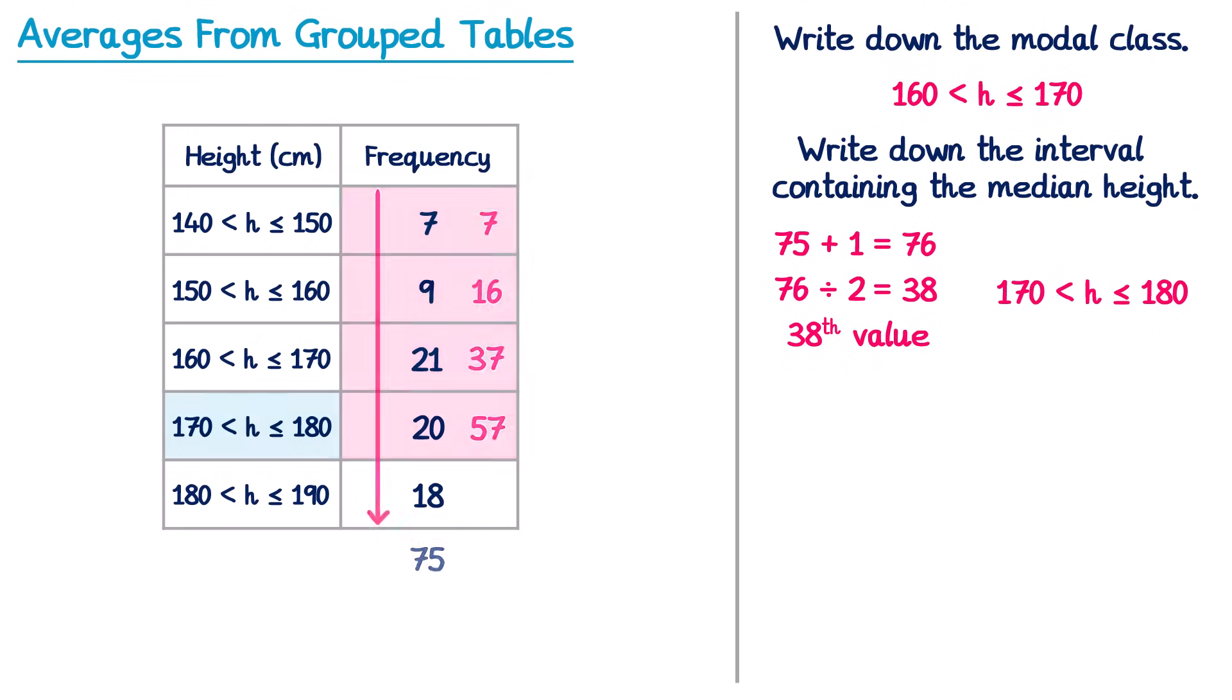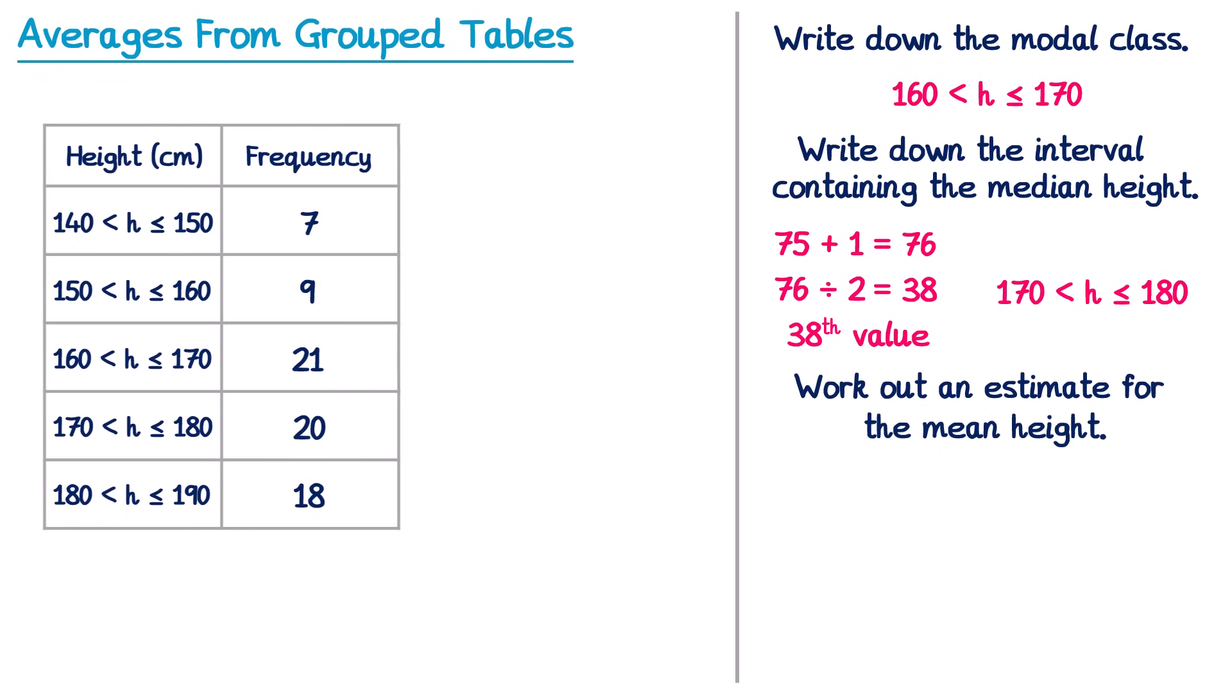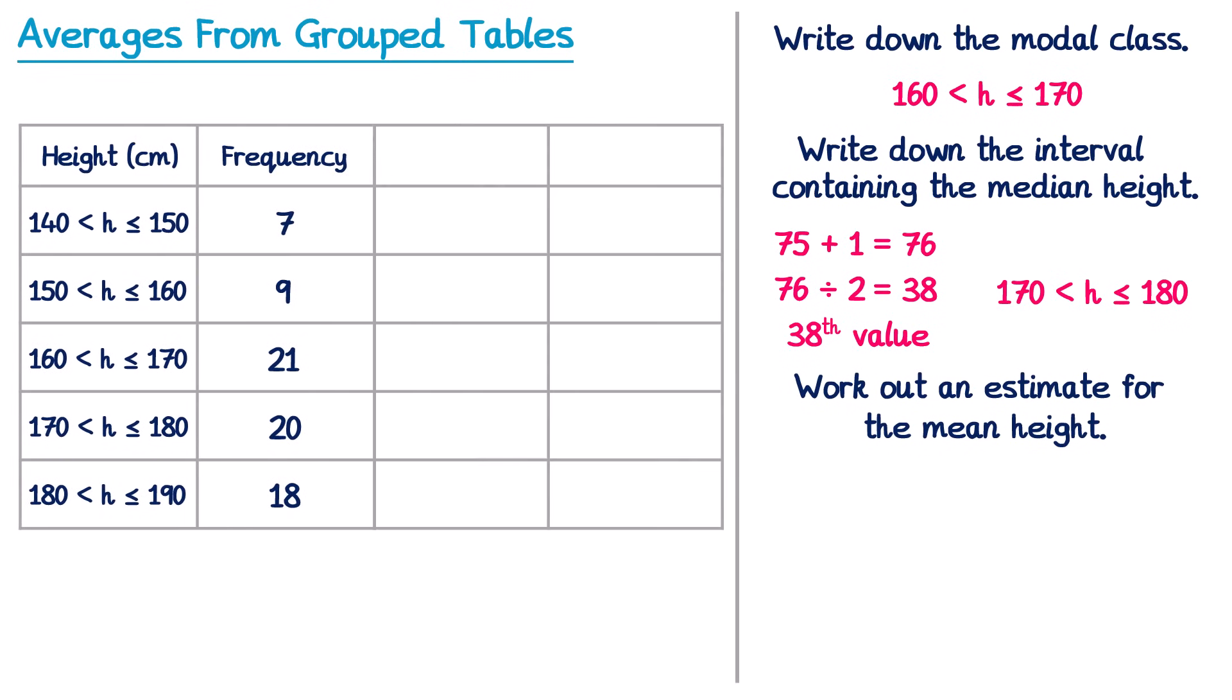Now let's move on to the mean. The wording of a question for the mean would say something like work out an estimate for the mean height. When we did the mean for a regular table we added an extra column, but this time we're going to need to add two more columns. We also multiplied whatever was in the first column by the frequency. Now this time that doesn't really work. How can you multiply an interval 140 to 150 by 7? It doesn't really make any sense. Instead we're going to need one particular value that we're going to multiply by 7.